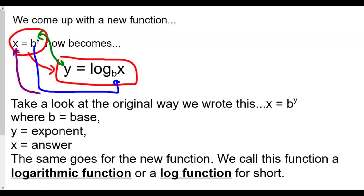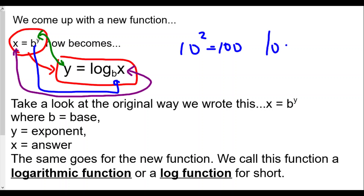The output of the original exponential problem becomes the input of our log. As an example: 10 squared equals 100. To write this in log form — the base becomes 10, the answer 100 becomes the input of our log function, and our exponent 2 now becomes the answer for the log. We just rearrange these numbers so that we have a log function. We use numbers to get the right form, and then later use them to help us find values.